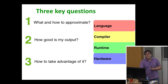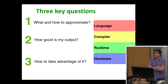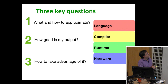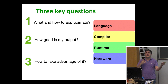There are three questions in approximate computing. First, at the language level: what and how to approximate — when writing code, how do you specify what can be approximated versus what must be precise? Second: how good is my output? When running the program, how do you reason about whether the output is good enough for the application? Third: how do you take advantage of it once you've written a program that way?